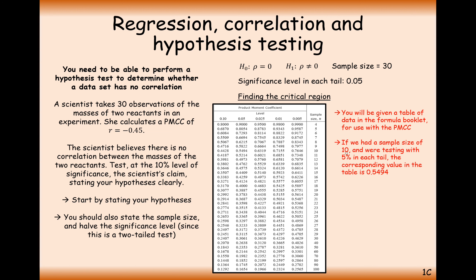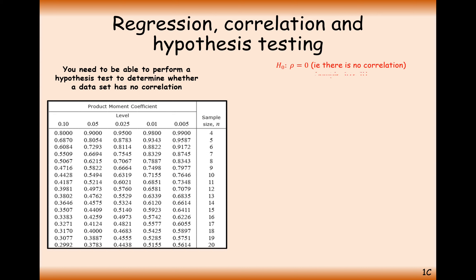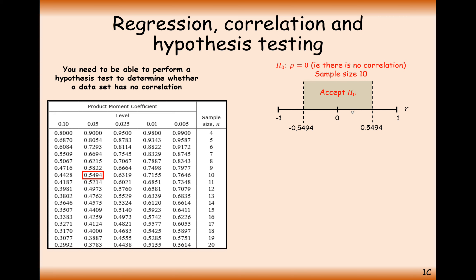If we start with a sample size of 10, the product moment correlation coefficient would have to be at least 0.5494 or below minus 0.5494 as the critical value. If it falls anywhere in between — say 0.2 or minus 0.1 — we accept H0, meaning no correlation. Outside that region, either below minus 0.5494 or above 0.5494, we reject H0 and accept the alternative hypothesis that there is some correlation.